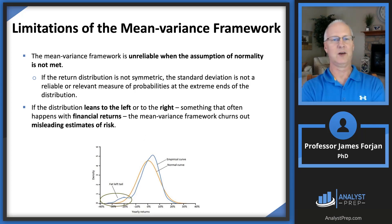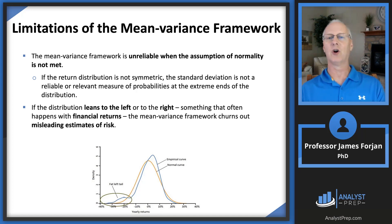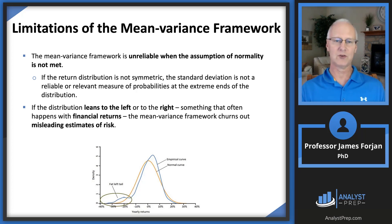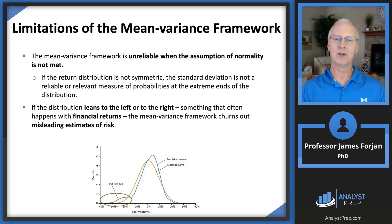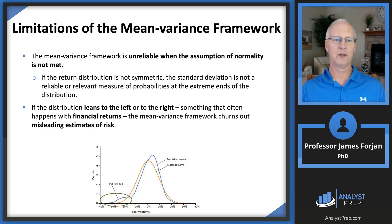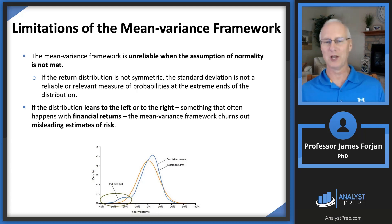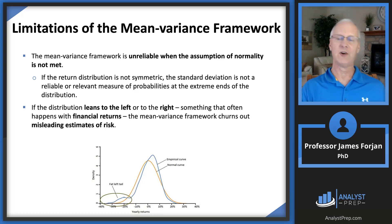What are the limitations of the mean-variance framework? That fat tail on the bottom left — the asset distribution curve — is not going to be symmetric. The normal distribution is not going to fully capture those fat tails on the bottom left. The mean-variance framework churns out misleading estimates of risk simply because asset returns — stock, bond, and alternative investment returns — typically do not follow a perfectly normal distribution. It's nearly normal, but abnormal enough that standard deviation can be misleading.